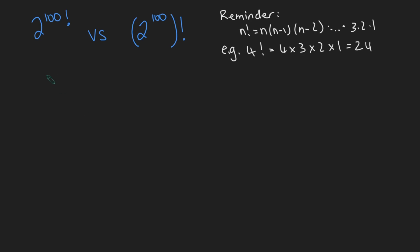Which of these numbers is bigger? Is it 2 to the 100 factorial or 2 to the 100 and then we take the factorial?